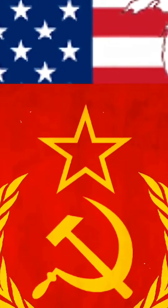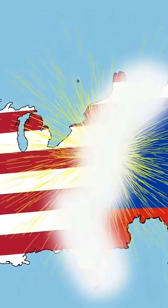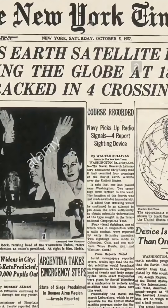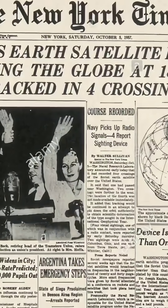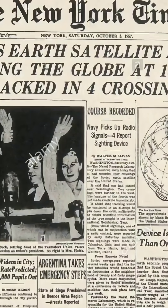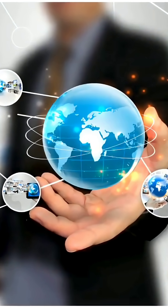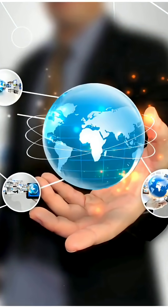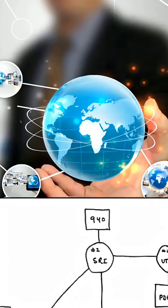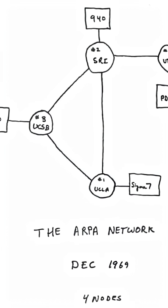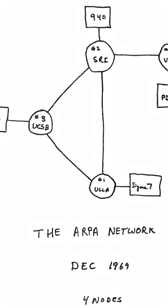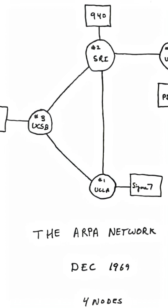It's the 1960s. The United States and the Soviet Union are deep in the Cold War. The US government worries that if a nuclear attack hits, traditional communication lines could be destroyed. So scientists come up with a radical idea: what if computers across the country could stay connected, even if parts of the system were knocked out?